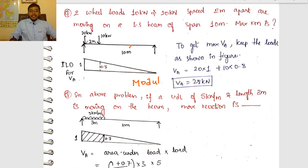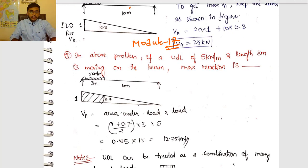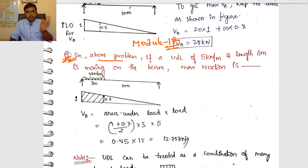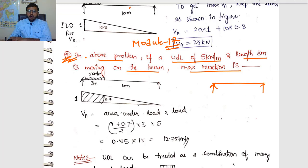Welcome to module 17, continuing the chapter on influence line diagrams. Today's question is related to ILD of reaction — the same as the last question but using a UDL instead of a point load. To get the reaction, first remove the support, then lift it by one unit. The deflected shape becomes your ILD for that reaction.